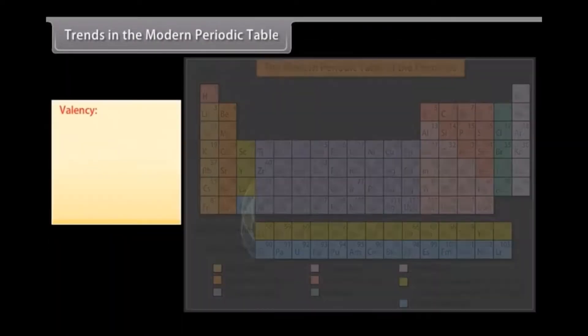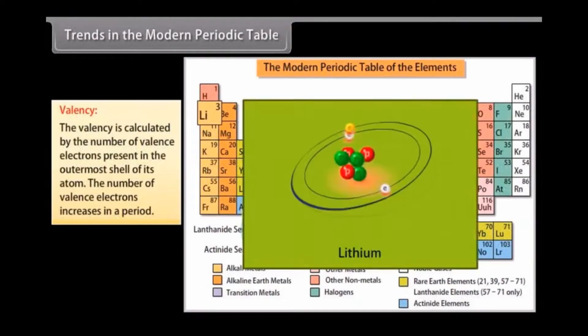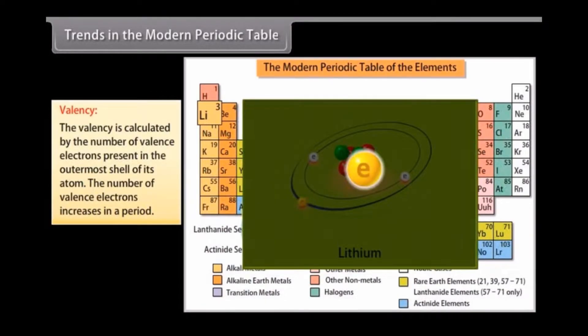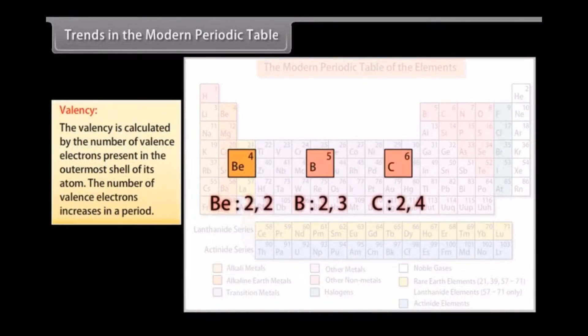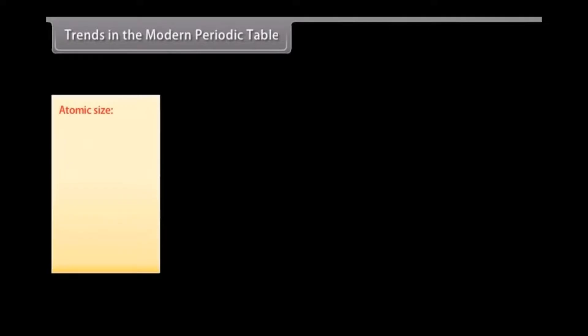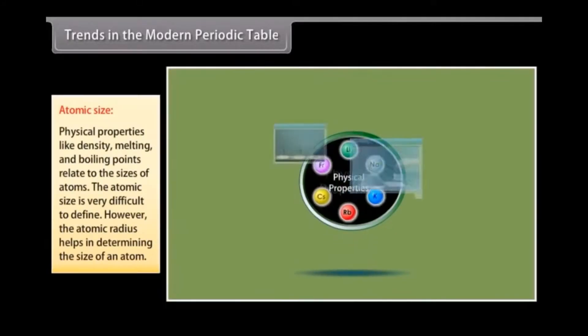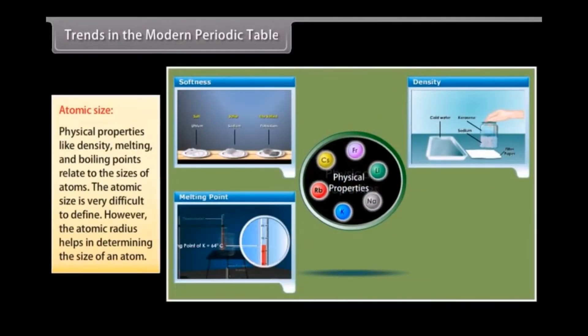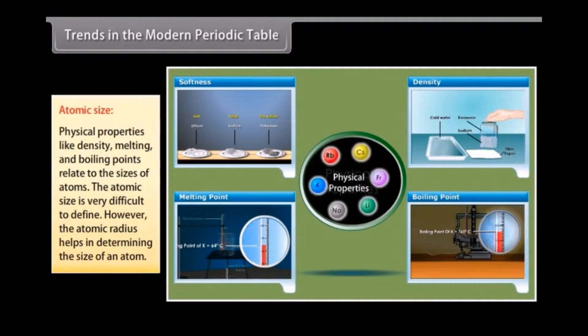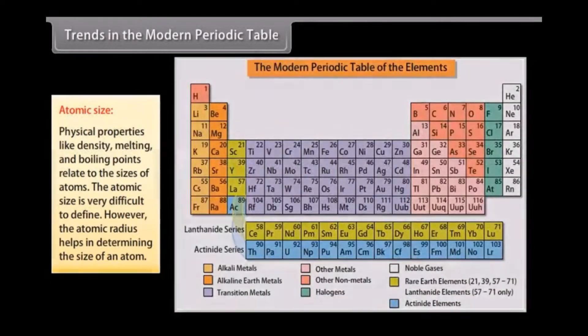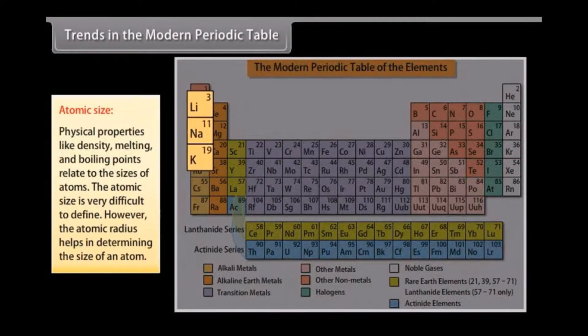Trends in the modern periodic table. Valency: The valency is calculated by the number of valence electrons present in the outermost shell of its atom. The number of valence electrons increases in a period. Atomic size: Physical properties like density, melting and boiling points relate to the sizes of atoms. The atomic size is very difficult to define. However, the atomic radius helps in determining the size of an atom.